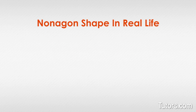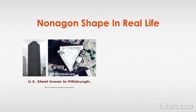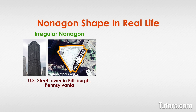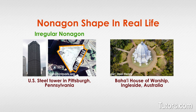Nonagons are rare in both the natural and human-made worlds, but there are two notable examples. First, the U.S. Steel Tower in Pittsburgh, Pennsylvania is an irregular nonagon. Second, all houses of worship in the Bahá'í Faith are regular nonagons.